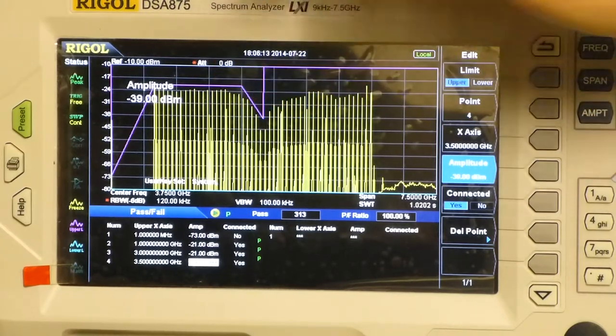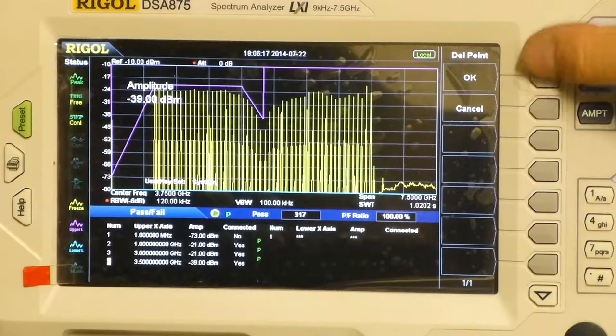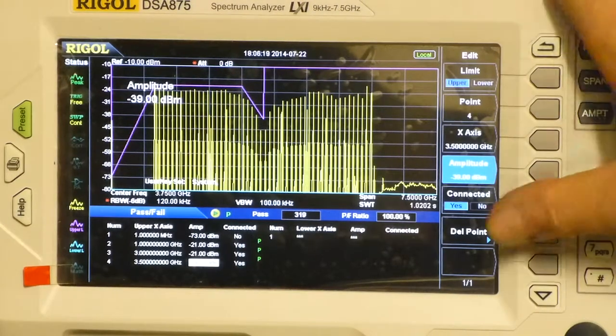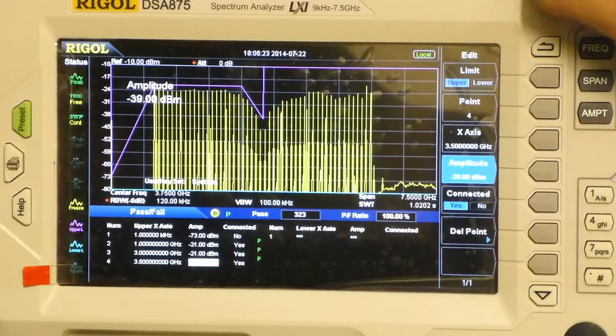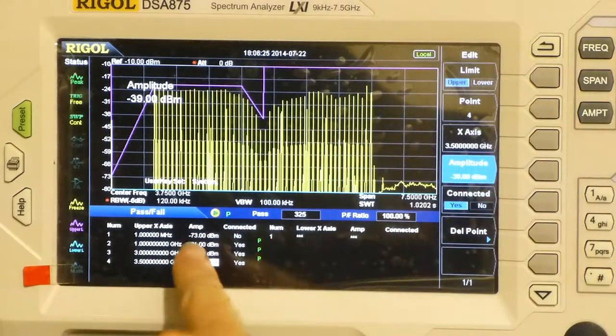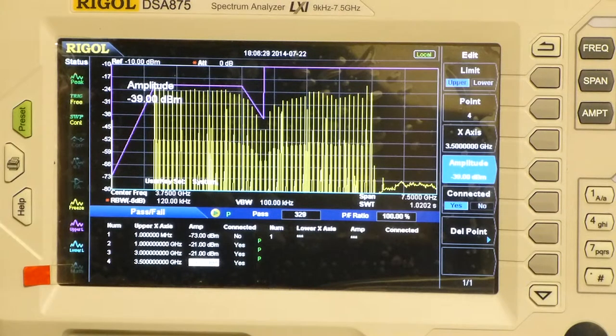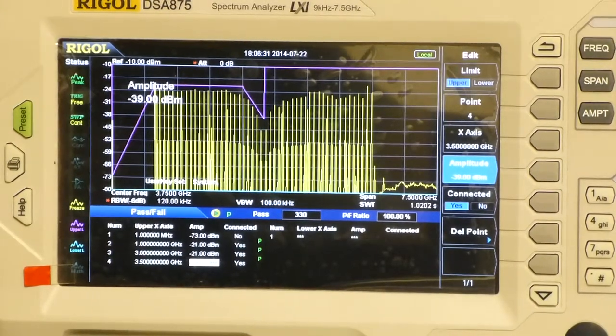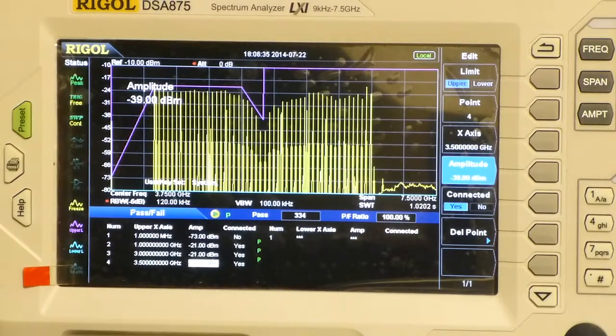So any emissions that exceed that level, I can then say I want the pass fail to trigger, and there are a number of options on this menu. You can also save and print out your pass fail table so that you've got an easy to recall limit line for your pre-compliance emissions standard.